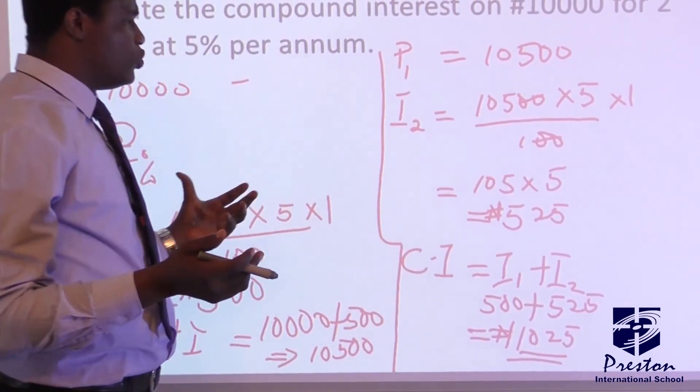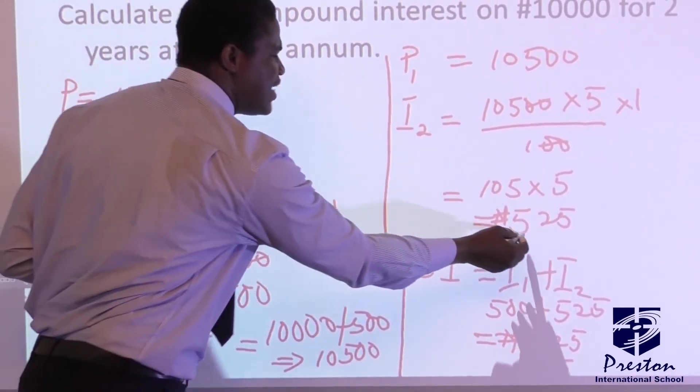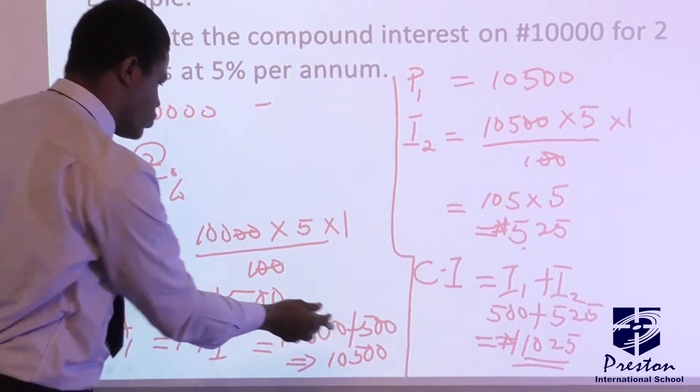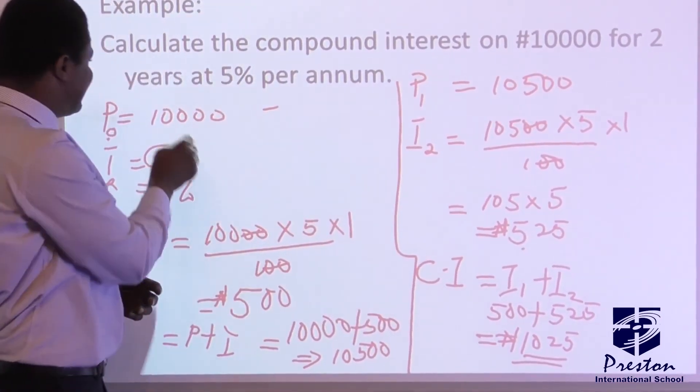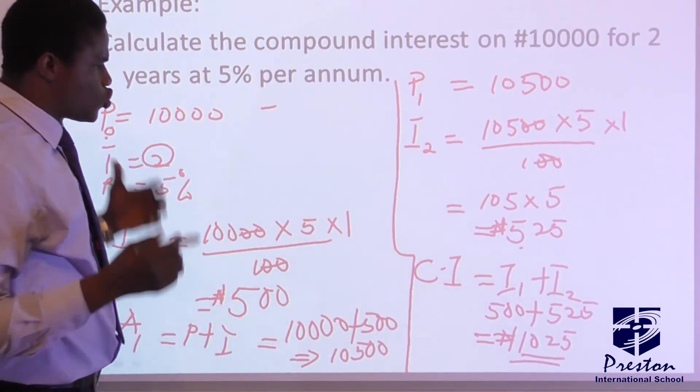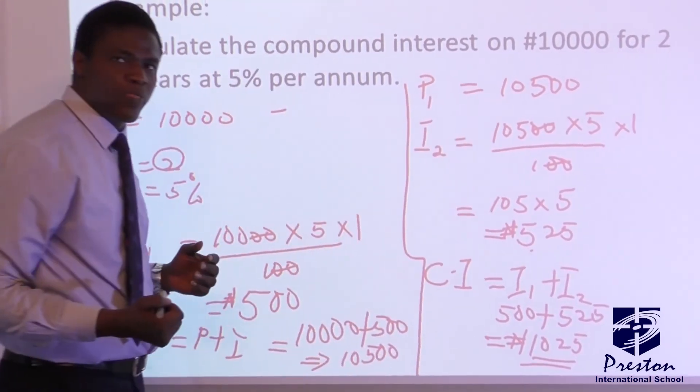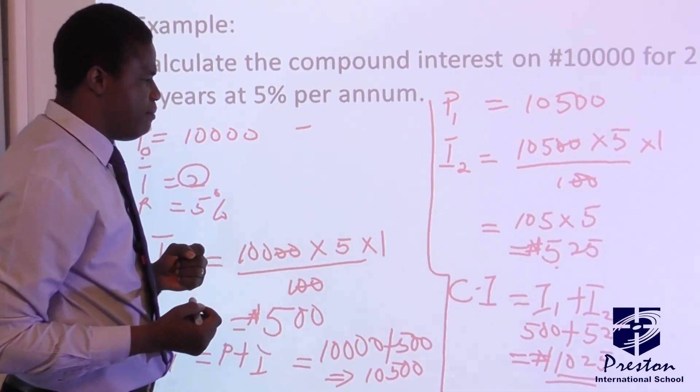So another way we can, another method we can use to get this thing is that we can have the interest here plus the principal 1. So we will now subtract the initial principal from it. So this is the compound interest. So take note of this method.